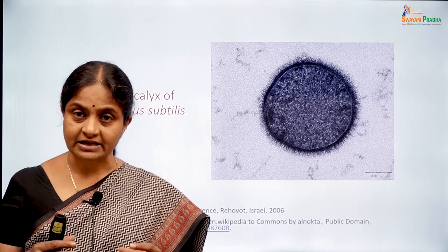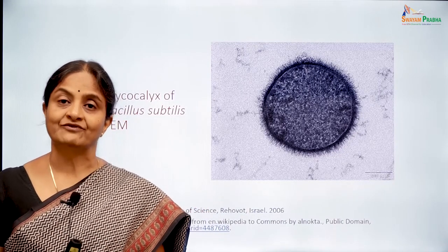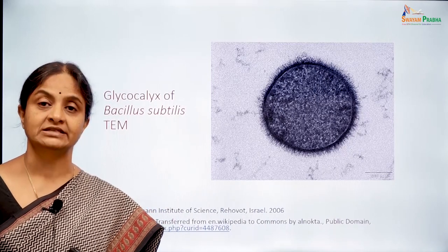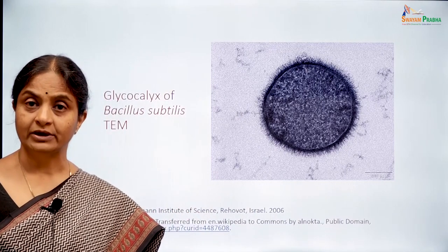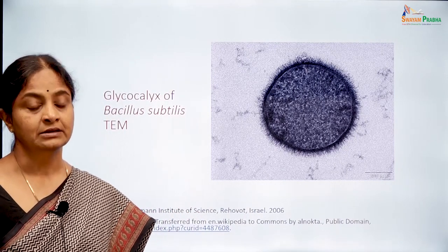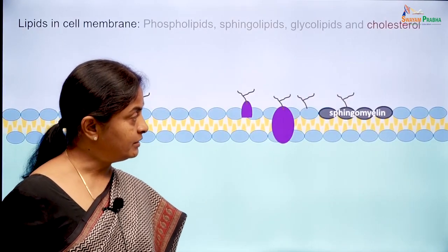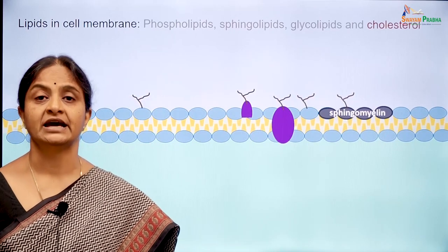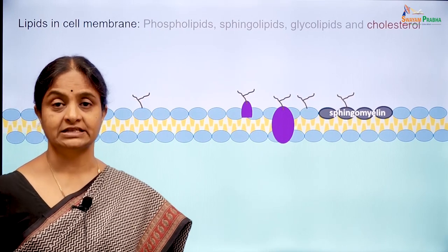If this glycocalyx is arranged in a very compact manner, it forms the capsule of a bacterial cell, which enhances its virulence. The role of the glycocalyx in the eukaryotic cell we are just beginning to understand — it is probably important for cell identity and for a cell to be recognized as a self-antigen.